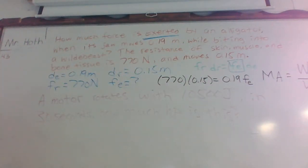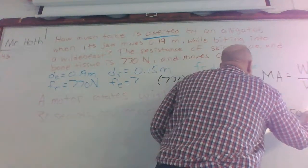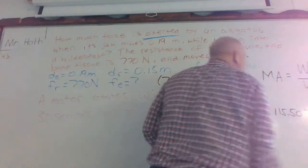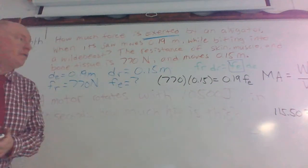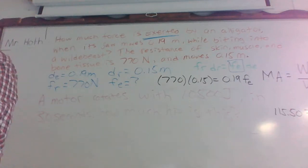So once we take 770 times 0.15, we get 88,935. About, that can't be right. 770 times 0.15, 115.5, okay, that sounds a little better. So 115.50 equals 0.19 FE. How do we get FE by itself? Divide each side by 0.19. We get 607, okay?